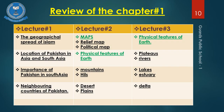Now we have completed chapter number one, so let's have a look at the lecture summary. In lecture number one we learned: geographical spread of Islam, location of Pakistan in Asia and South Asia, and neighboring countries of Pakistan. In lecture number two we completed maps, relief map, physical map, and physical features of the earth like mountains, deserts, and plains. Now in lecture number three we have studied rivers, lakes, delta, estuaries, and plateaus.